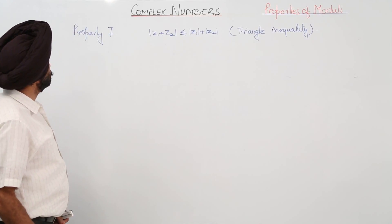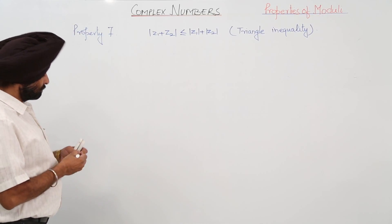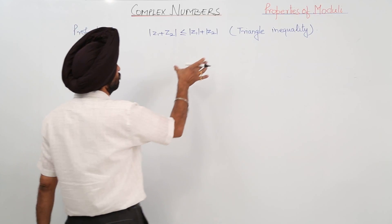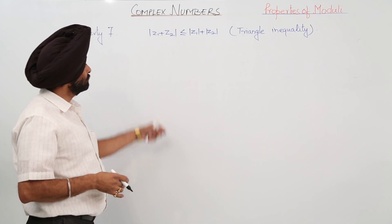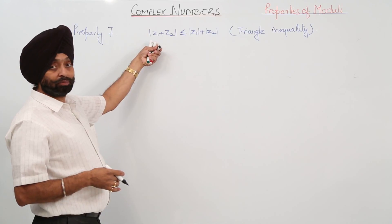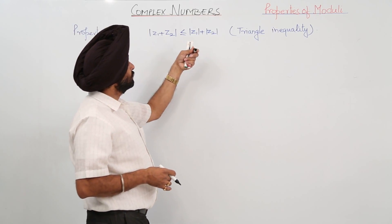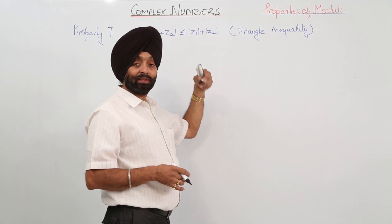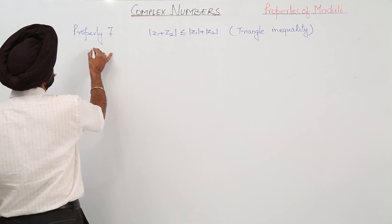The next property is also called the triangle inequality. It states that the modulus of the sum of two complex numbers is less than or equal to the sum of their individual moduli. Let's prove it.